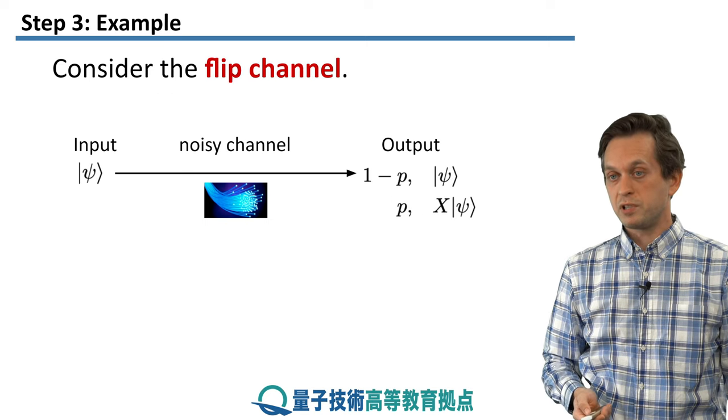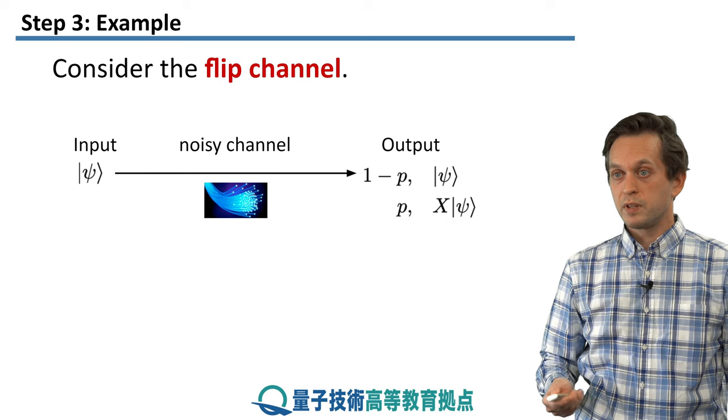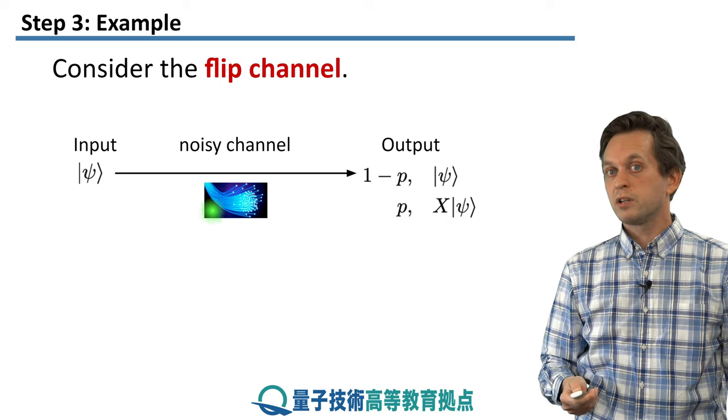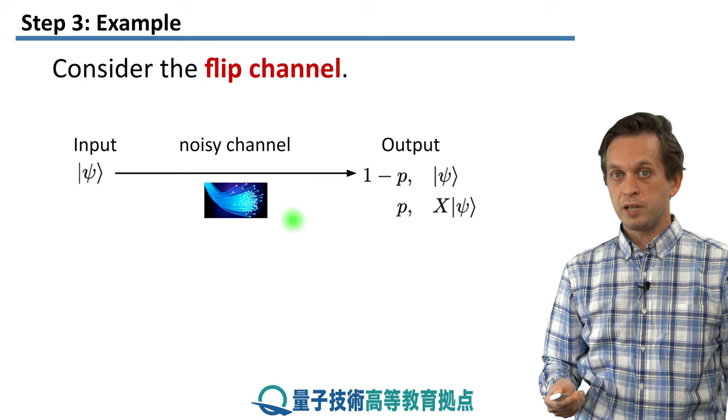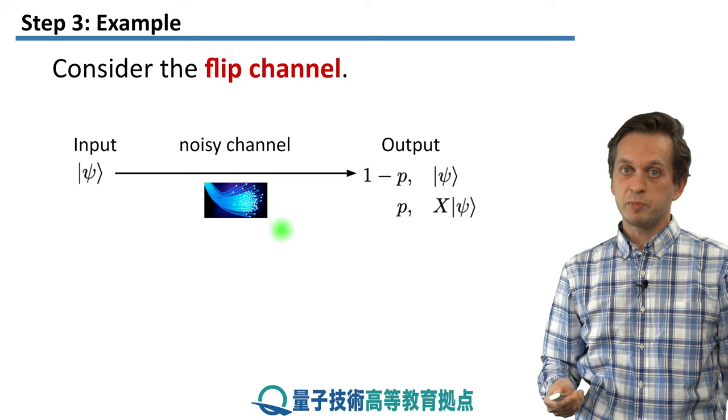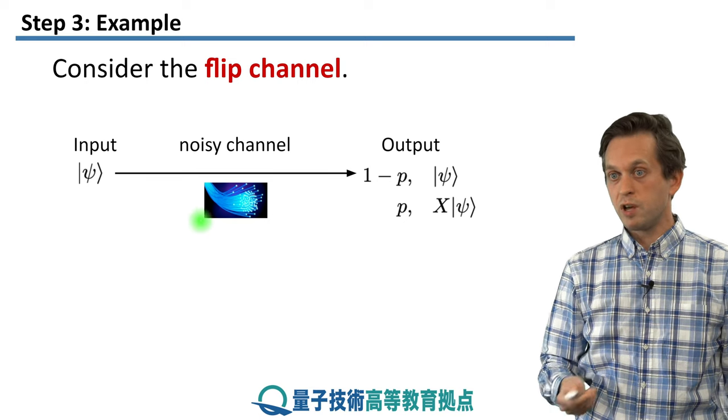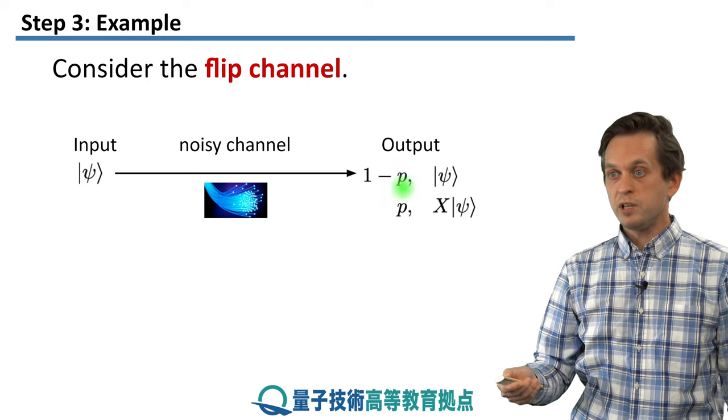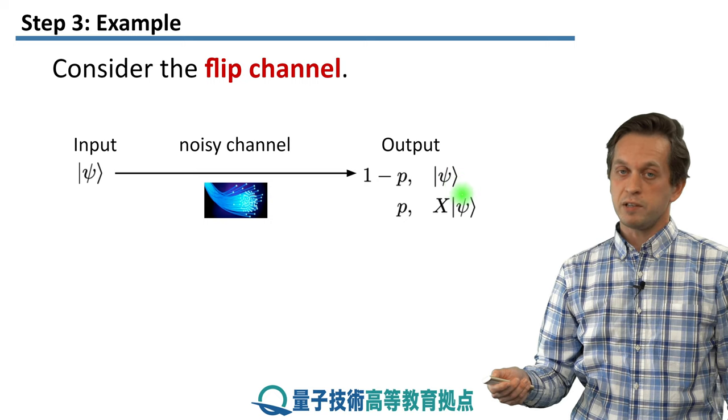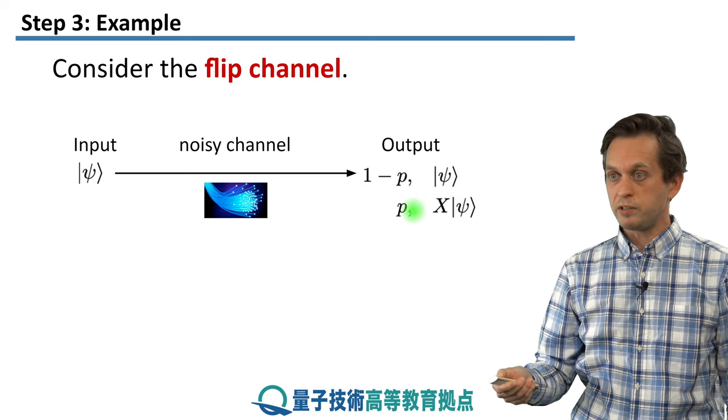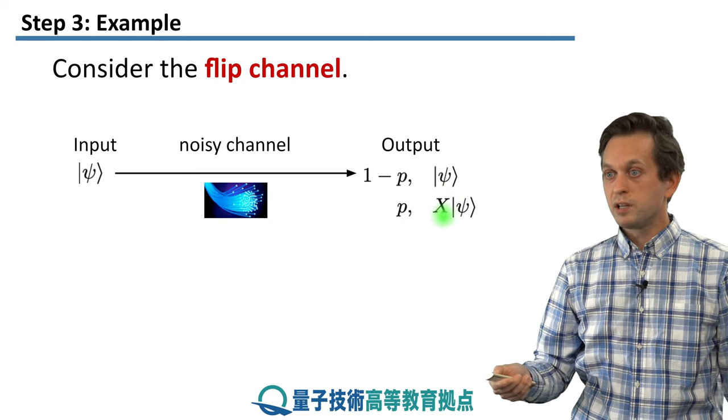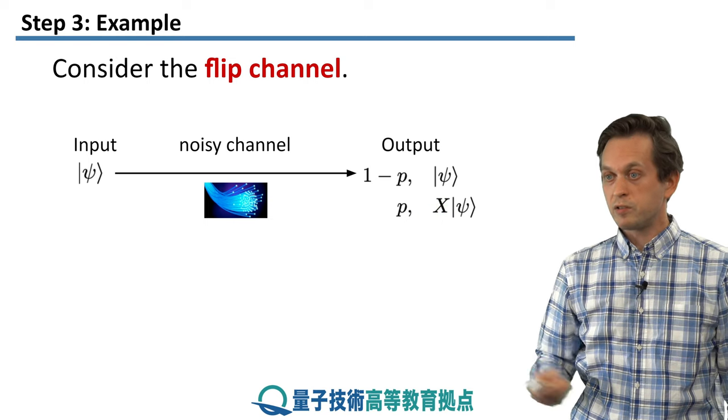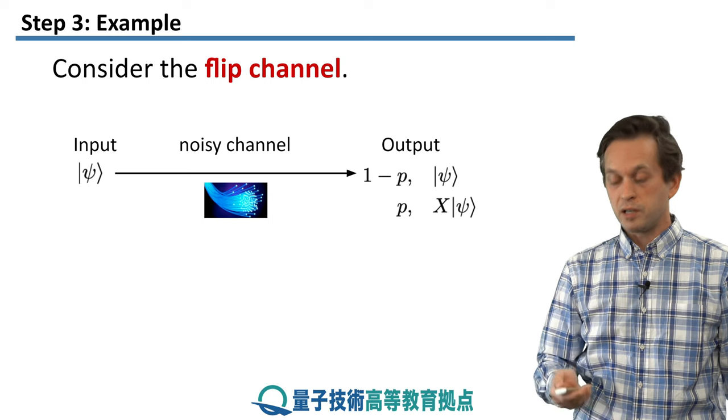So let's consider an example to see how it works. It's a simple channel where the only error that can occur is a Pauli X error. So basically it flips 0 to 1 or 1 back to 0. So we have an input state psi that goes through the channel. With some probability 1 minus P, nothing happens to the state. So basically we're applying the identity operator. But with some probability P, the state becomes flipped, which means we are multiplying the state with the Pauli X operator.